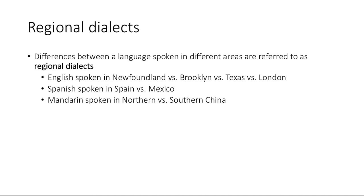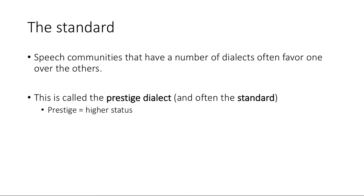There are often systematic differences in the way a language is spoken in different regions. The English spoken in Newfoundland versus Brooklyn versus Texas versus London all sound very different. Same with Spanish spoken in Spain versus Latin America, or Mandarin spoken in Northern versus Southern China. Every language has regional dialectal variability, although some more than others. Speech communities with multiple dialects often favor one over the others — this favored dialect is called the prestige dialect or the standard dialect. Prestige simply means higher status.